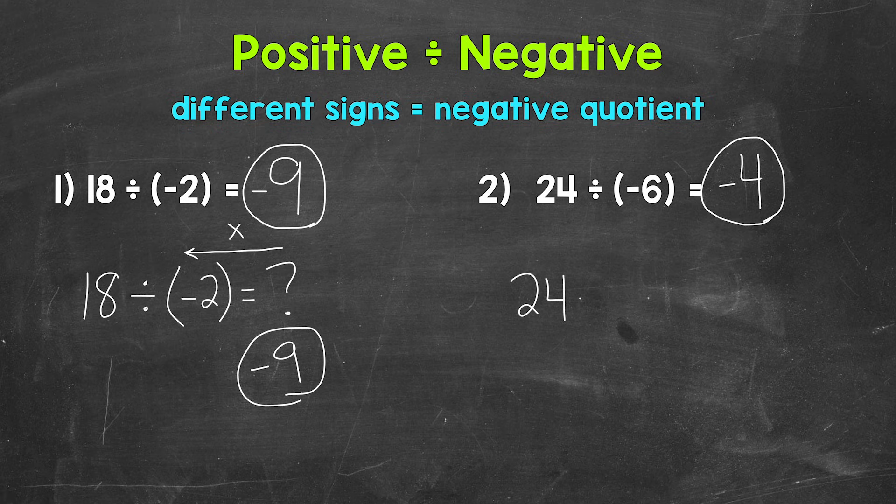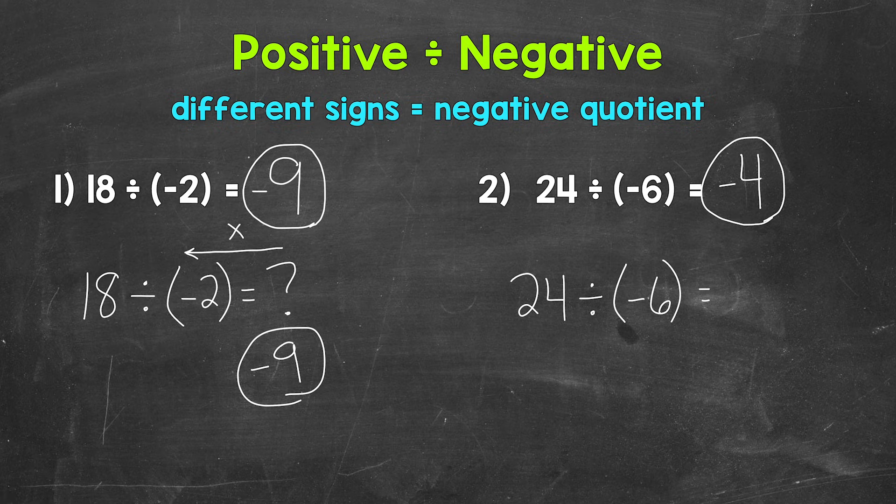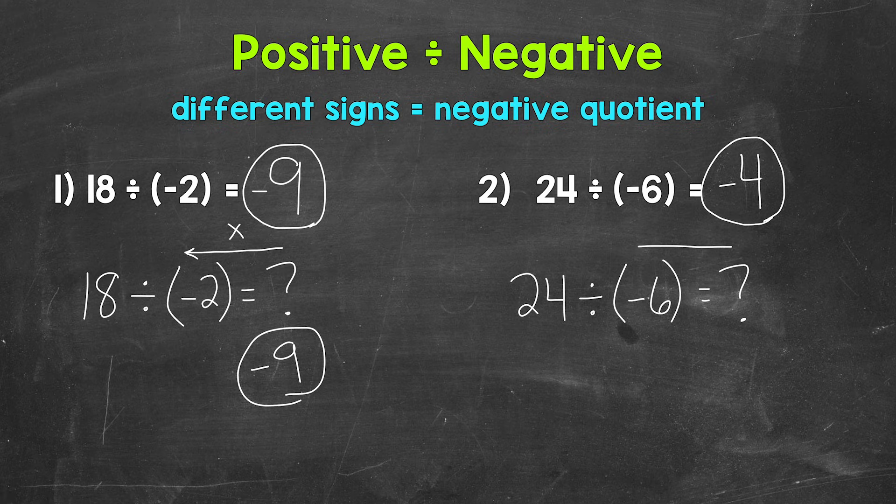24 divided by negative 6 equals. So how many groups of negative 6 or what times negative 6 equals that 24? Well,